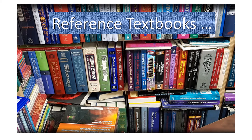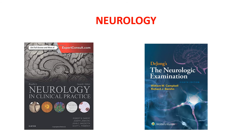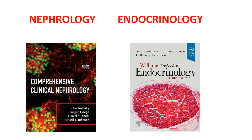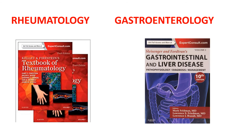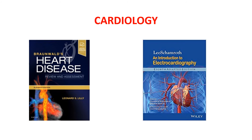Coming to reference textbooks — many of you have asked me which textbook to follow for which superspecialty. There are many both Indian and foreign authors. For neurology: Bradley's Textbook of Neurology is very lucid and very good, and DeJong's Neurological Examination is a must-read during your neurology postings. For nephrology: Comprehensive Clinical Nephrology by Feehally is a very good book. For endocrinology: Williams' Textbook of Endocrinology. For rheumatology: Kelley's Textbook of Rheumatology. For gastroenterology: Sleisenger and Fordtran's is a very good book. For cardiology: Braunwald's Textbook of Cardiology is recommended, and a must-have is a textbook of ECG — I would recommend Shamroth's Textbook of ECG.